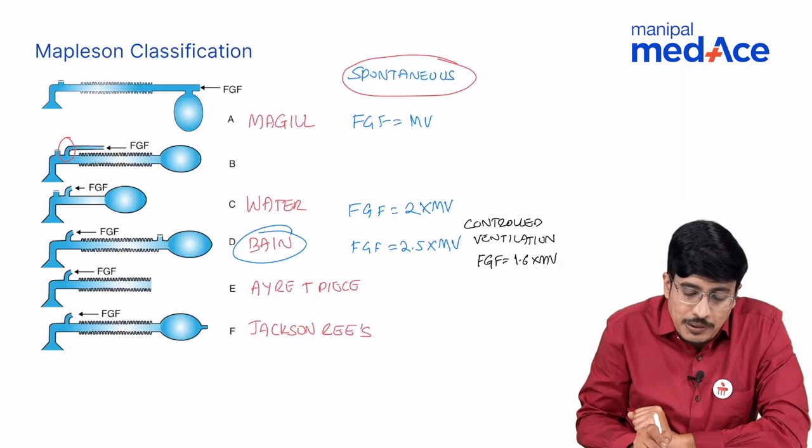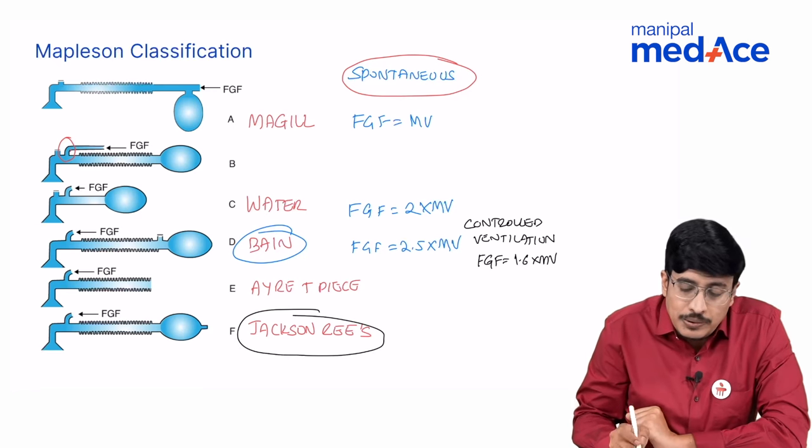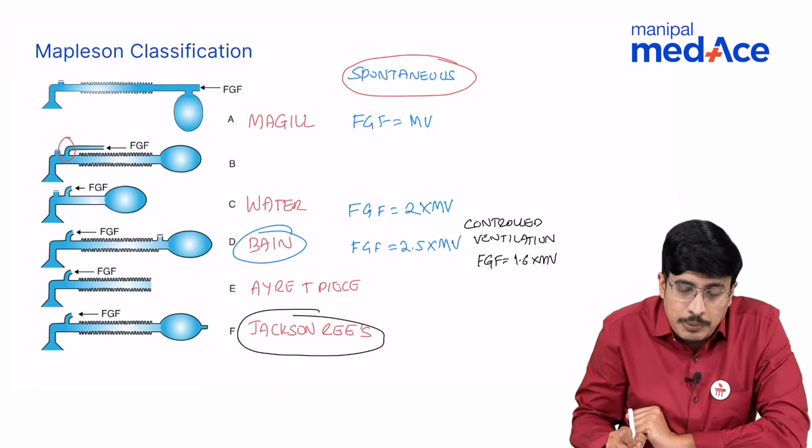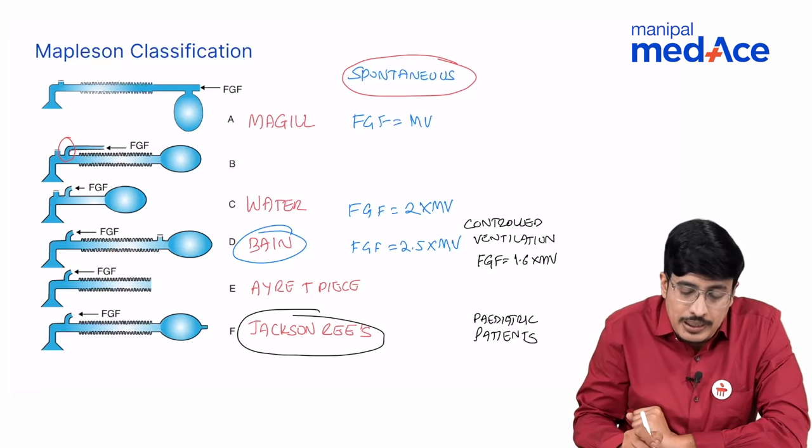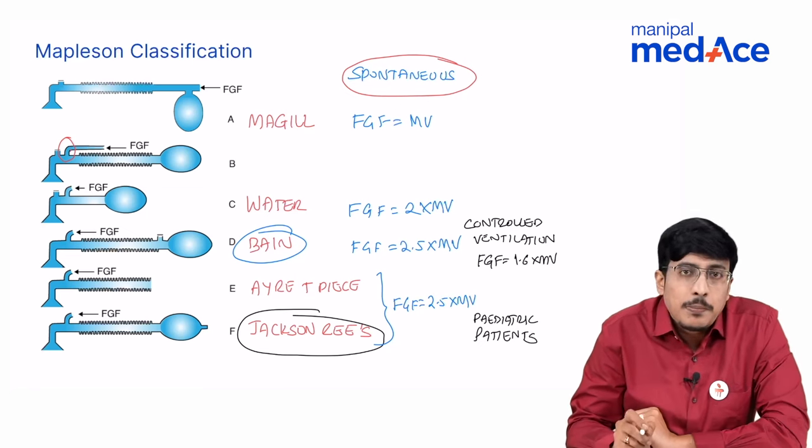Whereas the circuit that we commonly use is Jackson-Reese circuit. It is a circuit of choice in case of pediatric patients. Both in type E and F, the fresh gas flow is again 2.5 times the minute volume similar to Bain circuit.